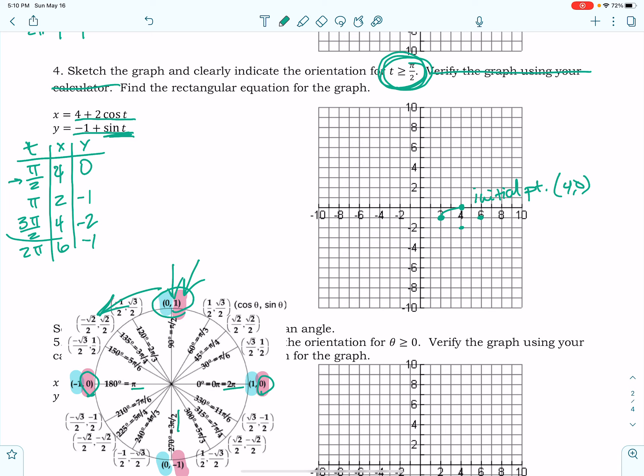All right. So this is an ellipse again. And notice, we're moving in the counterclockwise direction again. Okay. So that is what my graph would look like.